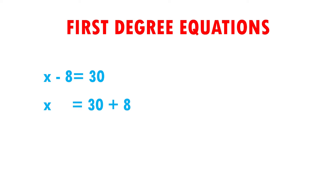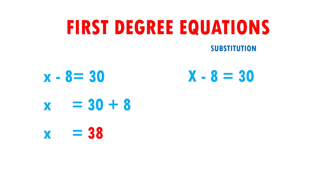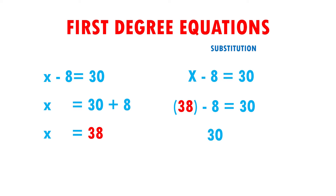Therefore, I have that x is equal to 38. To know if my result is correct, I have to substitute. I copy the same equation: x minus 8 is equal to 30. Now I put 38, which is the value of x, minus 8 is equal to 30. Once subtracting 38 minus 8, it gives me 30, and this is equal to 30. Therefore, I can say that the result of my equation is correct because both sides are the same. Very easy, right?